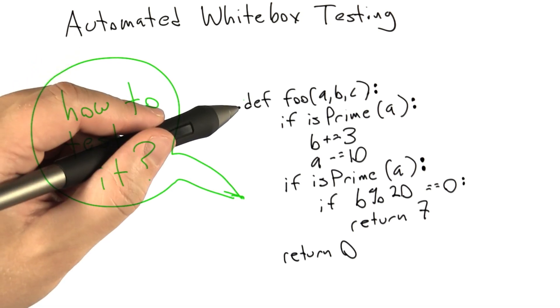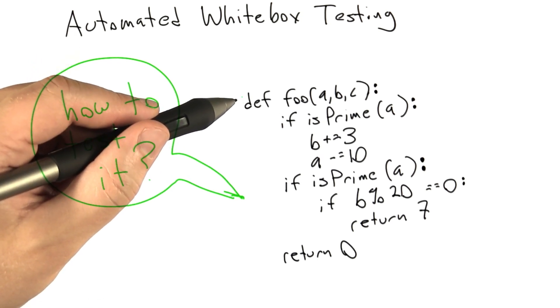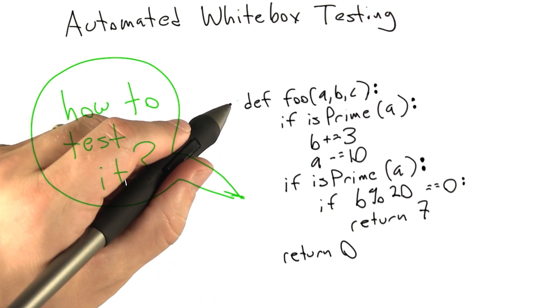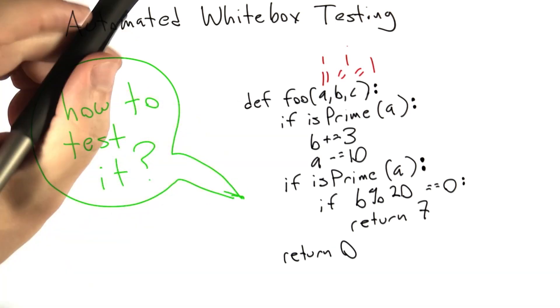So let's see how that works. This tool's goal is to generate good path coverage of the code that you wrote. It starts off making up random values for your code. Let's say 1, 1, and 1 for the inputs.